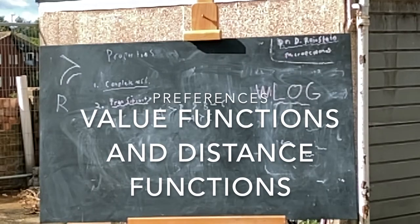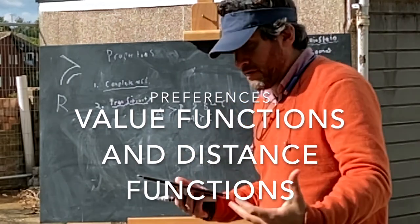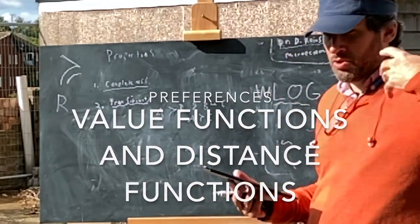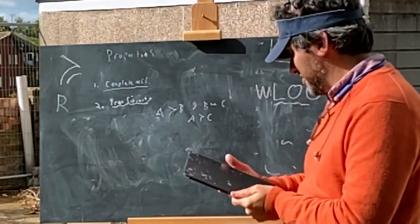All right, just a quick note on the next thing. We're talking about possible forms for preferences, possible restrictions on preferences, and then we'll consider whether they satisfy these axioms.